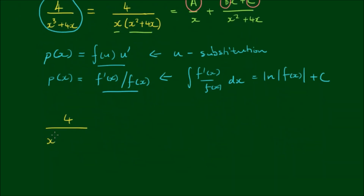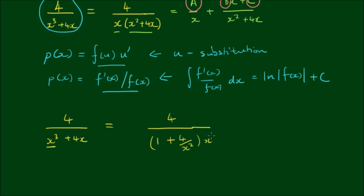Let's see if we can do that. We have 4 divided by x cubed plus 4x. Let's factor out an x cubed from the denominator. So we can write this as 4 divided by x cubed times the quantity 1 plus 4 divided by x squared. I can rewrite this as 4 times x to the negative third power, divided by 1 plus 4 times x to the negative second power.